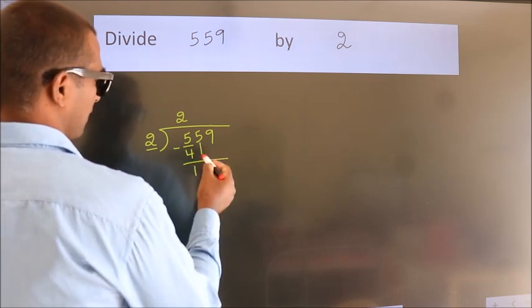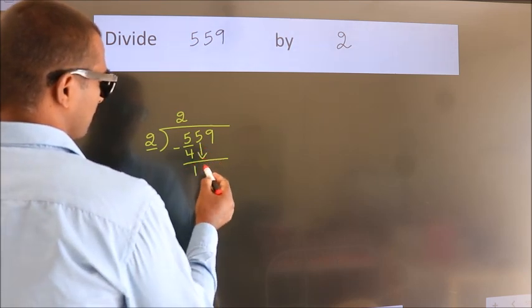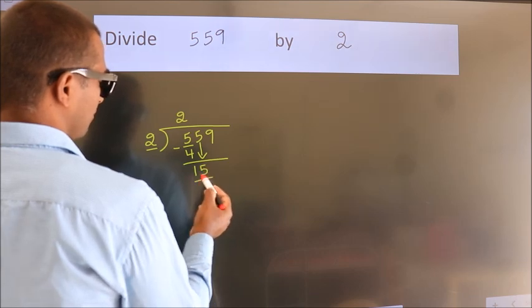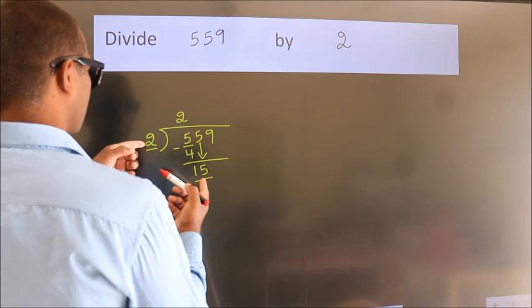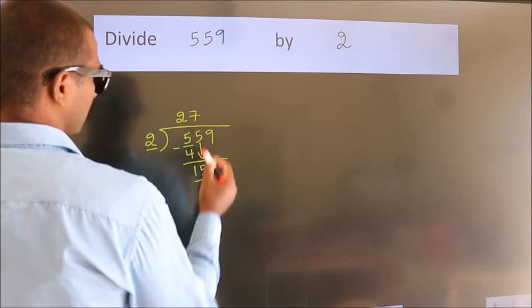After this, bring down the beside number. So, 5 down. So, 15. A number close to 15 in 2 table is 2 7's, 14.